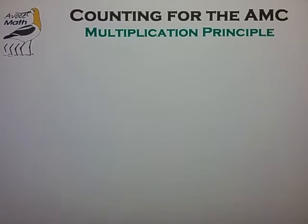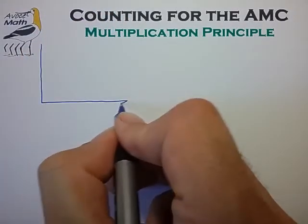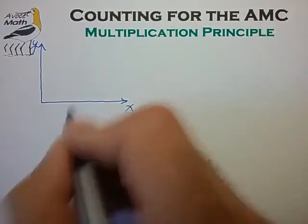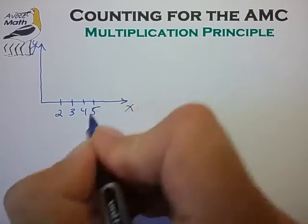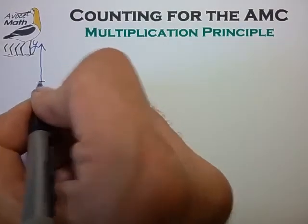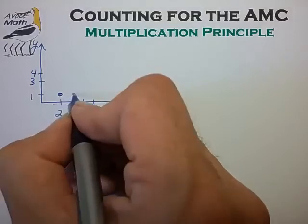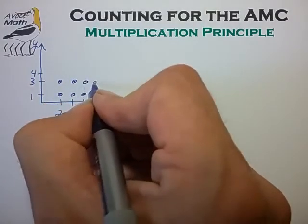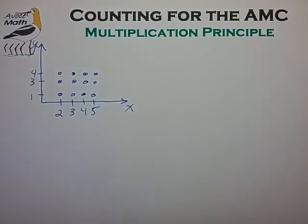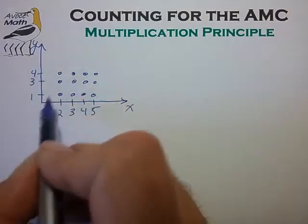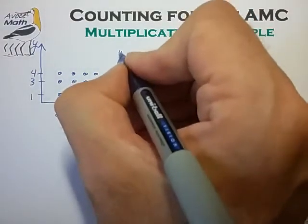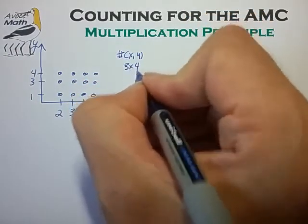The multiplication principle is a bit tricky because it comes in two different subtle forms. In the simplest form, the choices we're trying to multiply are independent of one another. In our simple example from the prior video, we were looking at forming points along the XY plane where we restricted our choice of X values to the set of 2, 3, 4, and 5, and our choice of Y values from the set of 1, 3, and 4. We form a two-dimensional grid of possible XY points, and the number of XY points is given simply by 3 times 4, which equals 12.